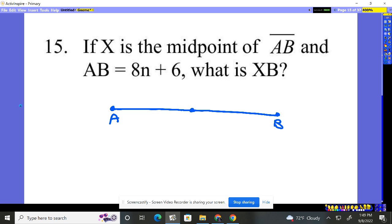X is in the middle, so X is right here in the middle. It says A to B, the whole distance, is 8n plus 6. So it wants to know what is that part? Well that's just half of 8n plus 6. What's half of 8n plus 6? 4n plus 3, just cut them each in half.